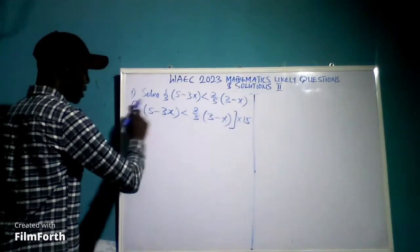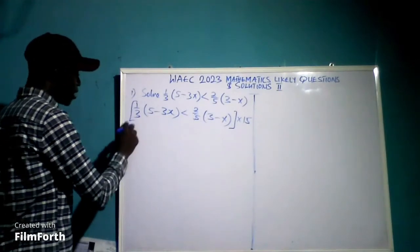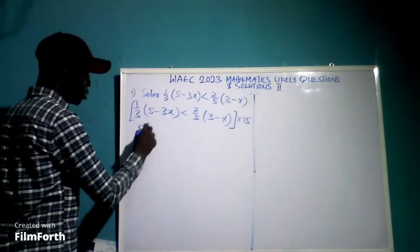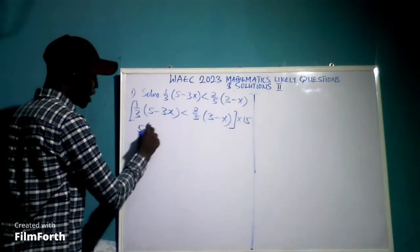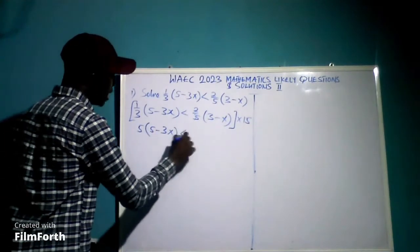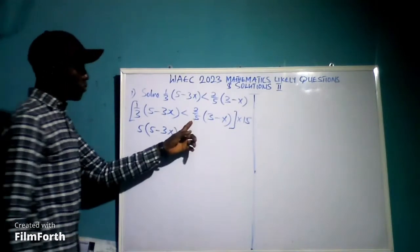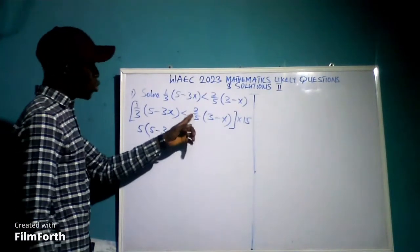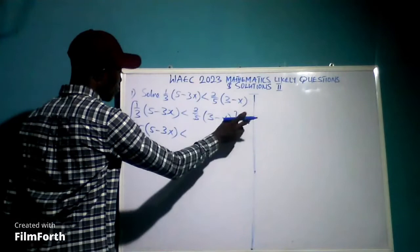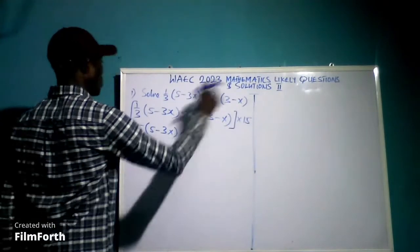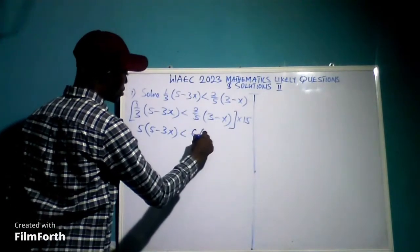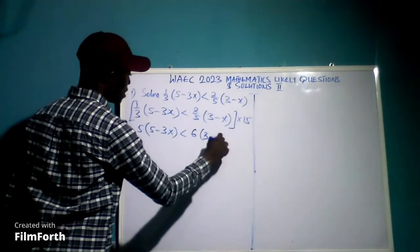I choose 15 because it will work for both parts — it will remove the fraction on each side. 15 multiplied by one-third gives us 5, so we have 5 open bracket 5 minus 3x, close bracket. And 15 multiplied by two-fifths gives us 6, so we have 6 open bracket 3 minus x, close bracket.